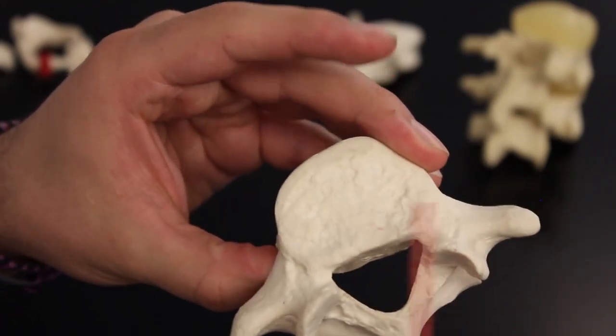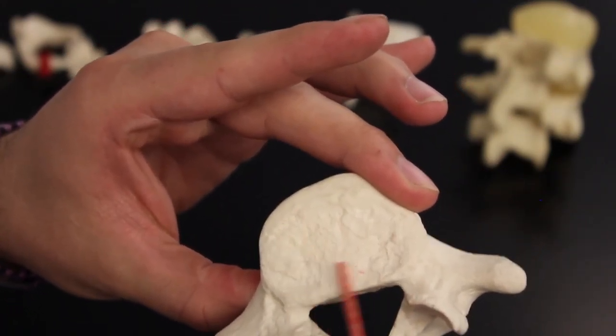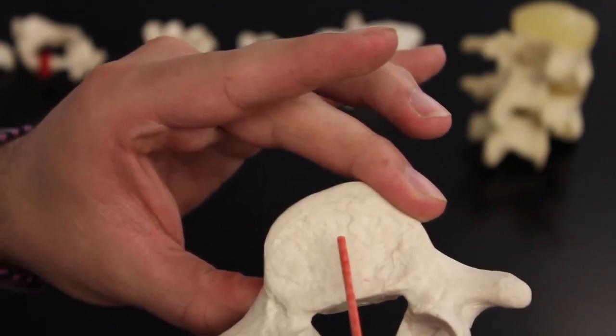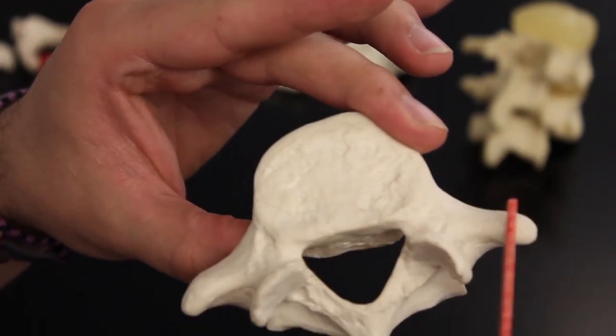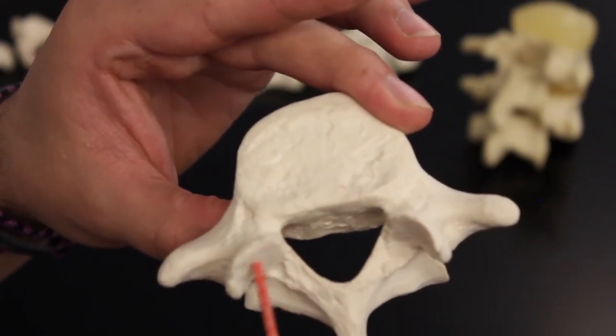Lumbar is really weight-bearing, and look at that body - it's a really thick body right there. These are going to be your transverse processes right here.